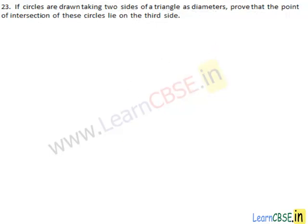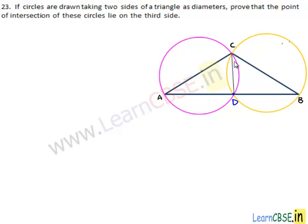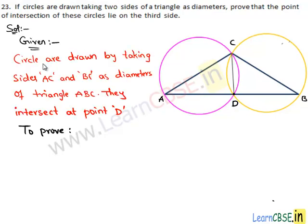Let's prove this. We have a triangle ABC and circles with diameters AC and BC. Let the point of intersection of these two circles be D. When we join CD, we have to prove that D lies on AB.